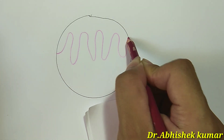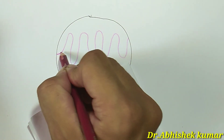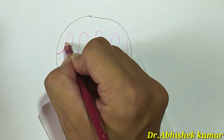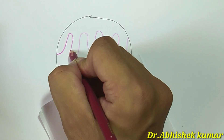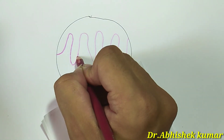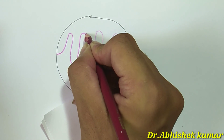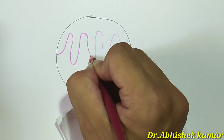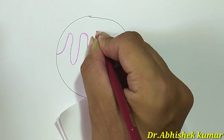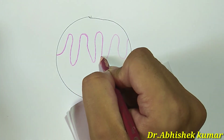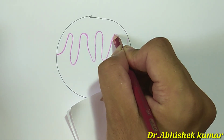Stomach is a muscular bag that receives the food bolus from the esophagus. It also acidifies and converts the ingested food into a thick viscous pulp that is also called as chyme. It also absorbs water, salt, alcohol, and certain drugs.